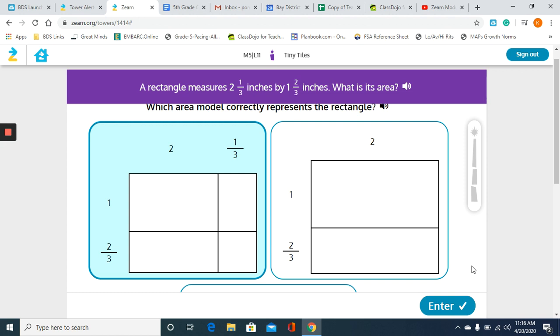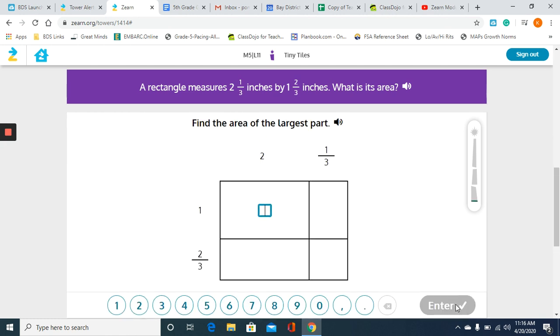So we're going to go back to the first one because that obviously has our correct choices. Now they want you to find the area of the largest part. All you're going to do here is multiply the two numbers that intersect. We can see that the 2, if it were traveling down the box, would intersect here and the 1 would intersect here. So this is pretty much 1 times 2.